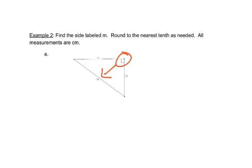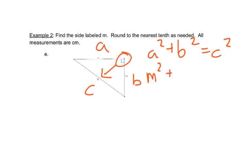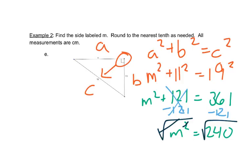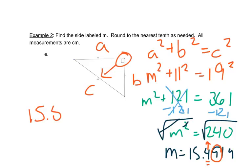Again we look for the right angle — across from it is 19, so that will be C. A and B are the other two sides in either order. So we have M squared plus 11 squared equals 19 squared. 11 squared is 121, 19 squared is 361. We subtract 121 from both sides to get M squared by itself, giving us 240. We take the square root of both sides and get 15.4919... The nearest tenth is 15.5 centimeters, since the number after tells us to round up to 5.